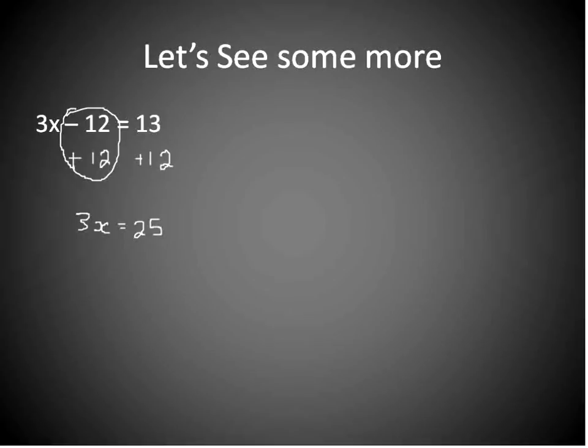All right? And now what we're going to do is take both sides and divide them by 3. All right? These two cancel each other out and x is equal to, well it's kind of a funky looking x there, but x is equal to 25 over 3.